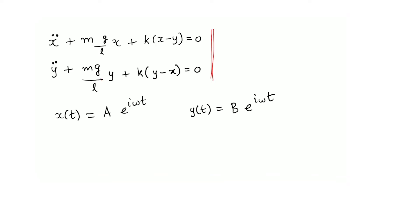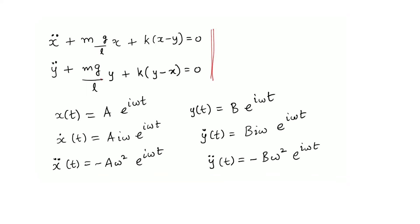I have also made an assumption about the initial condition, basically that the initial velocity is 0. If the initial velocity were not 0, I would have had to add additional phases, but let us simplify the problem and assume the initial velocity is 0. Now all I want to do is substitute these assumed solutions back into the equations of motion.